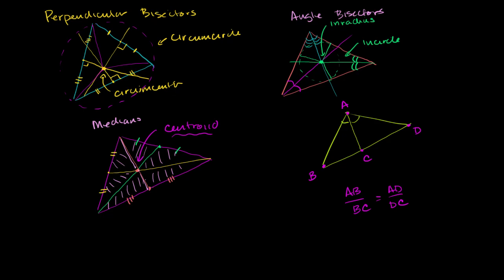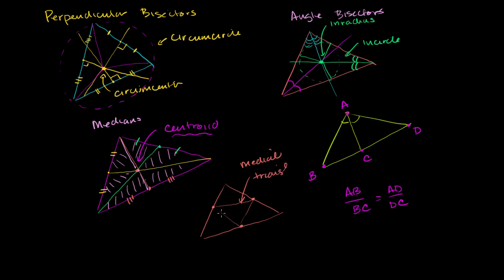Another related concept we learned was the idea of a medial triangle, where you take the midpoint of each side and draw a triangle connecting those midpoints. We call this a medial triangle. We proved to ourselves that when you draw a medial triangle, it separates the original triangle into four triangles that not only have equal area, but are actually congruent triangles. Not only are they congruent, but we showed that this side is parallel to this side, this side is parallel to this side, and this side is parallel to this side. Each of these lengths is half of the corresponding side of the original triangle.